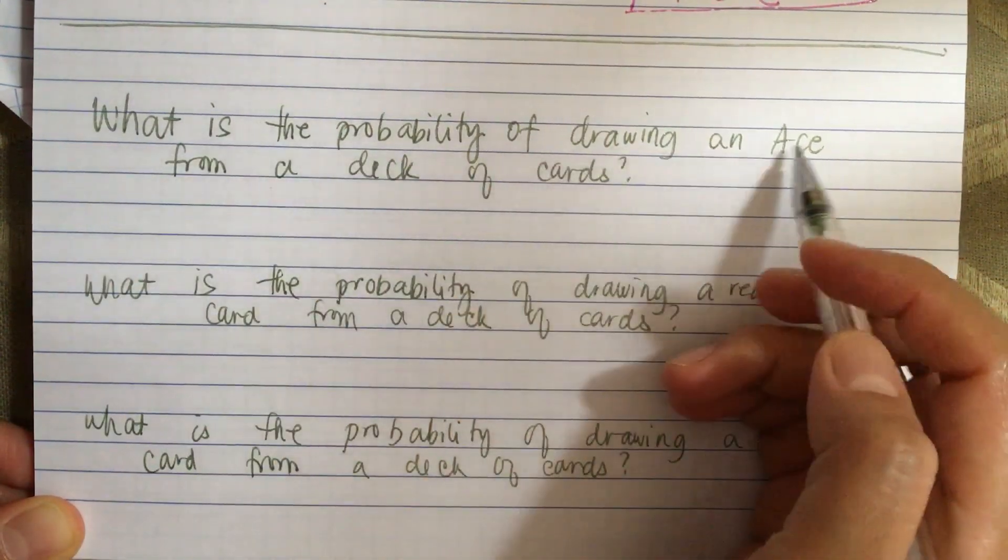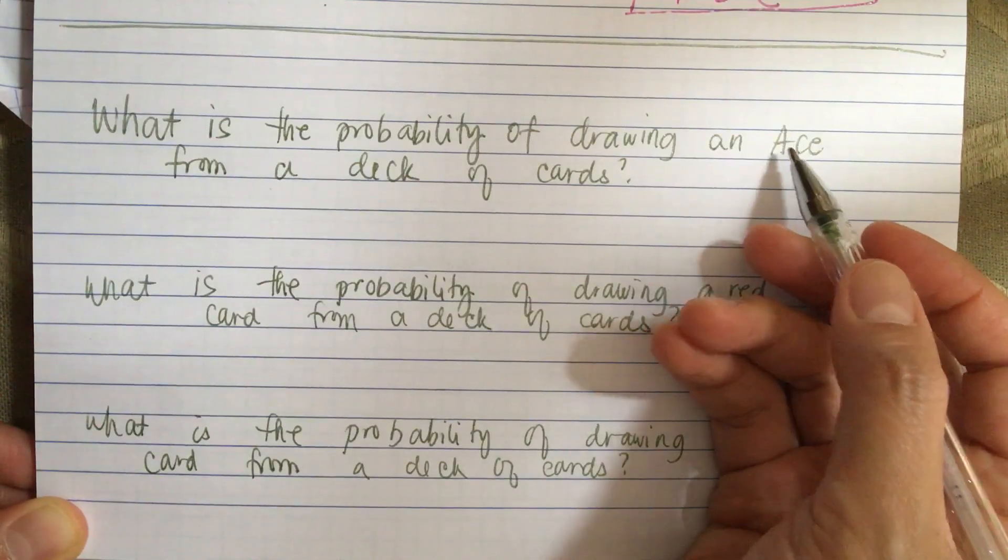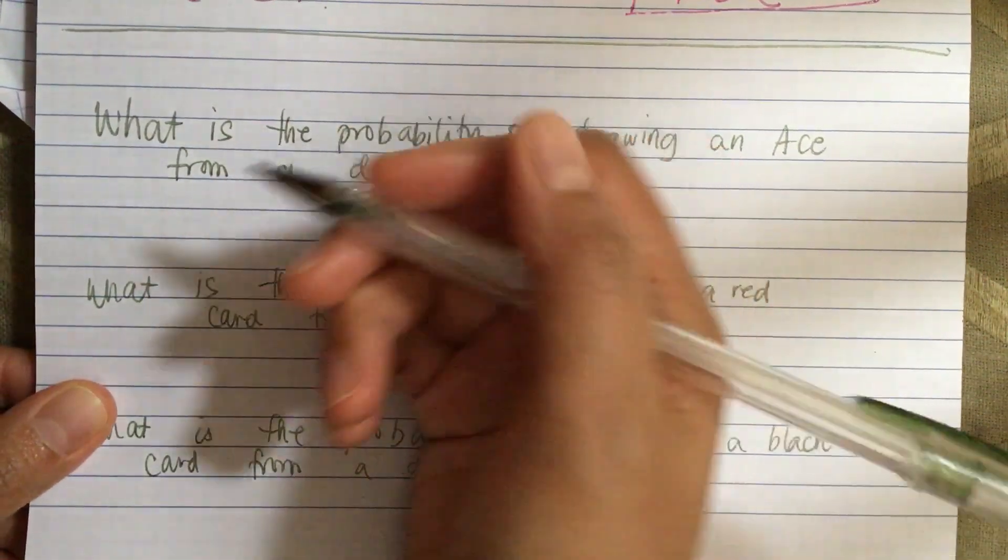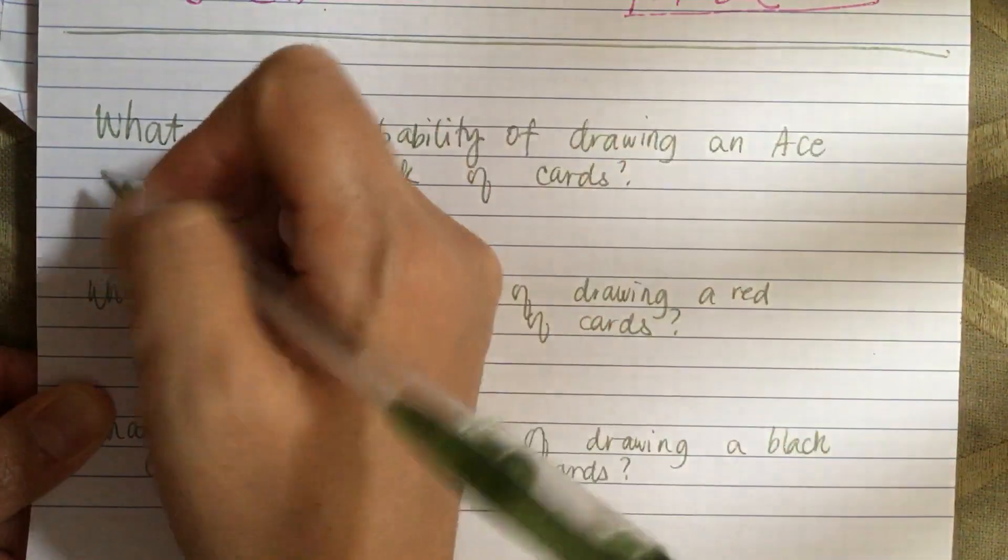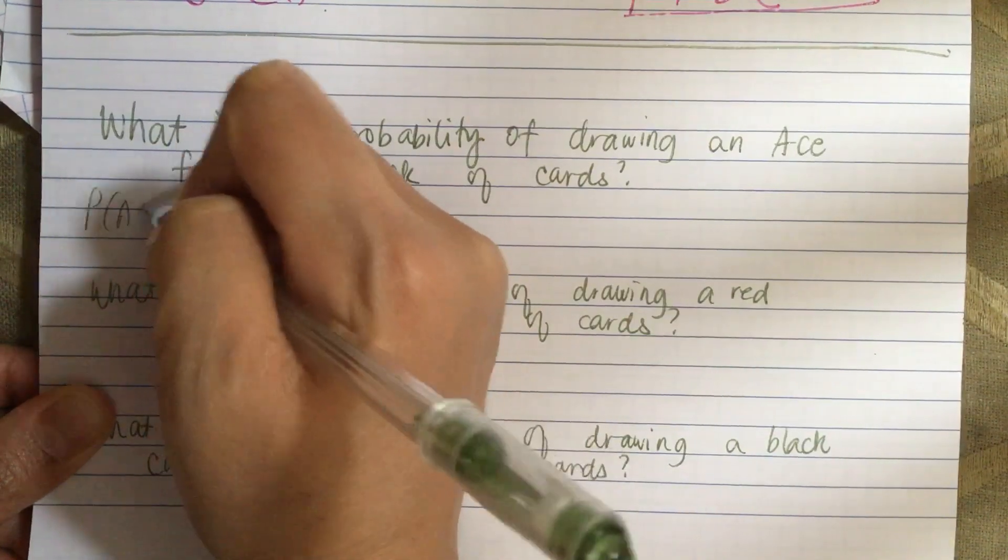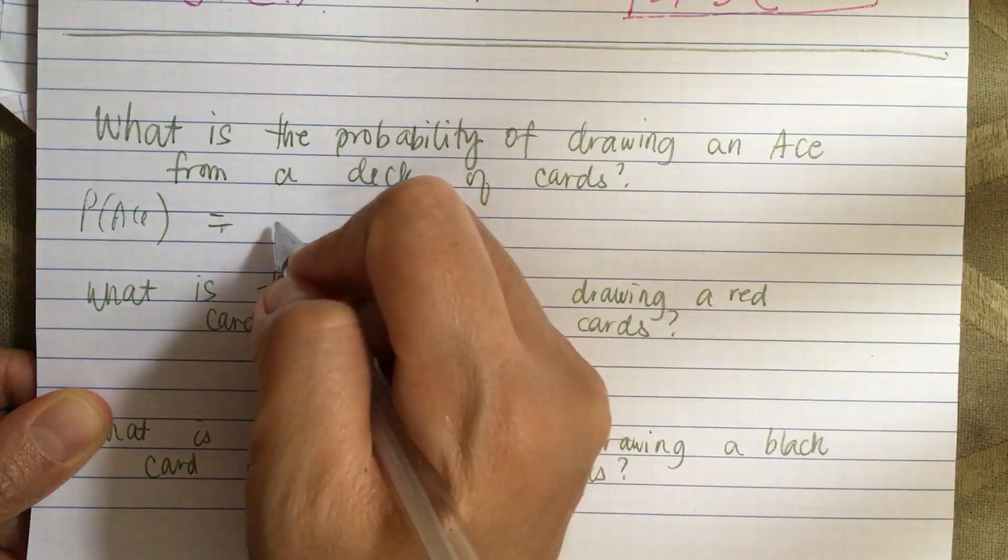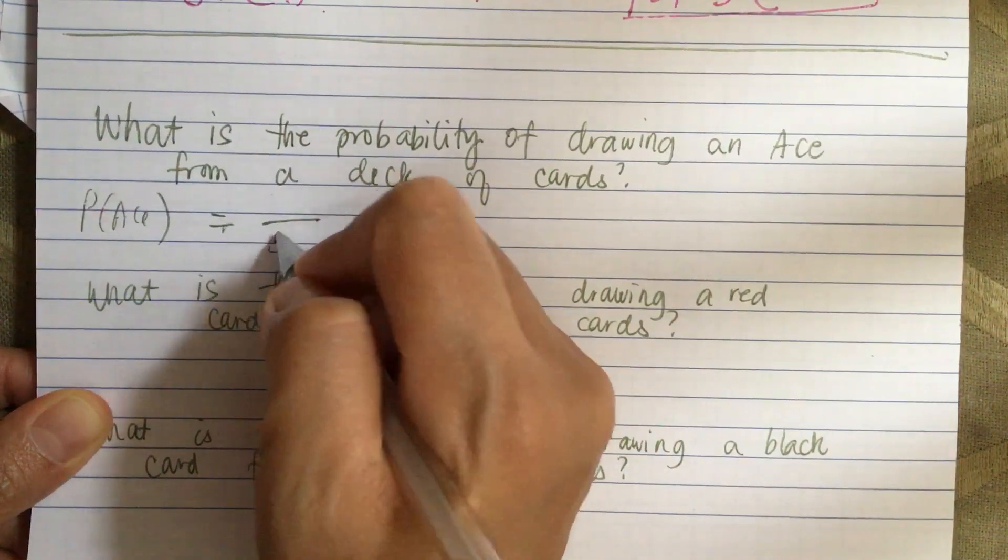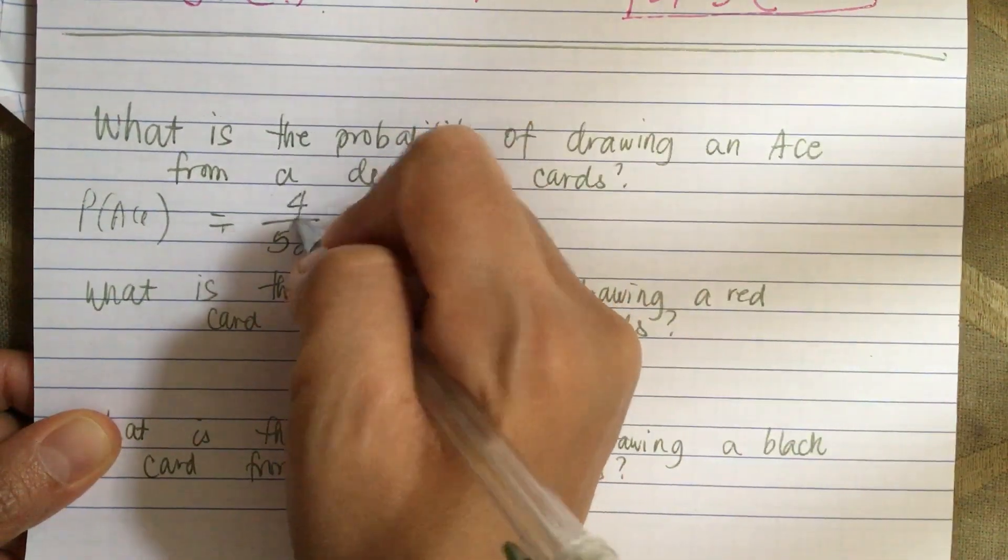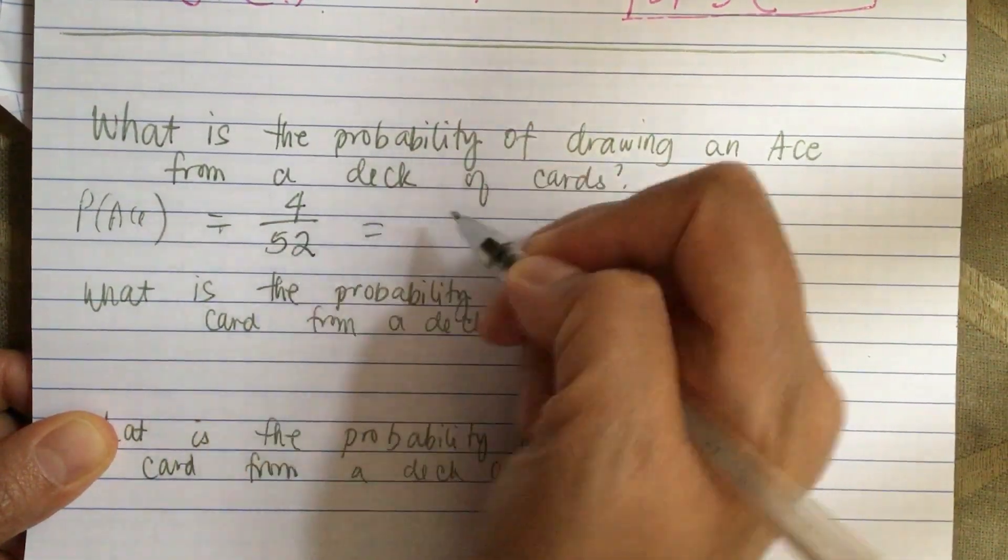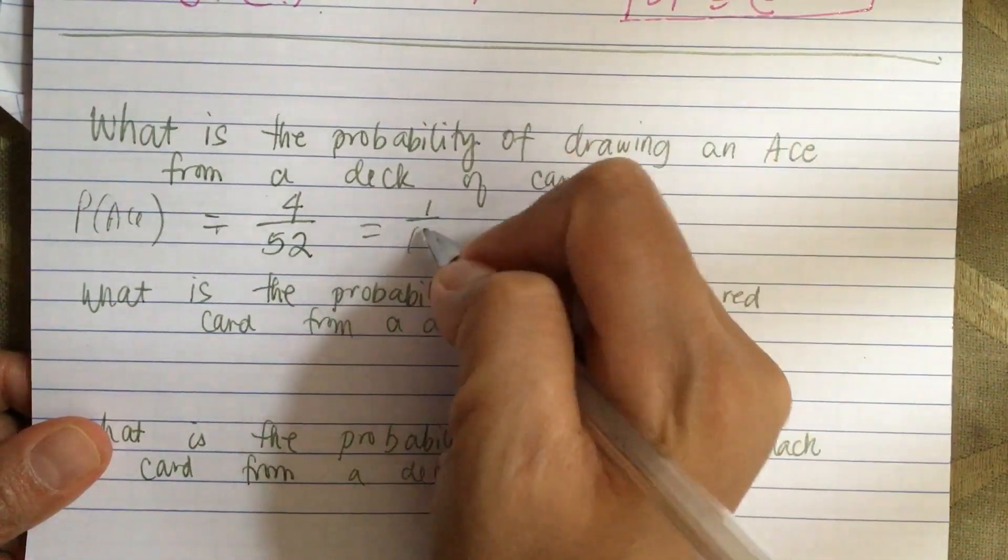What is the probability of drawing an ace from a deck of cards? The probability of ace: there are 52 cards total and there are four aces, so four out of 52, which reduces to 1/13.